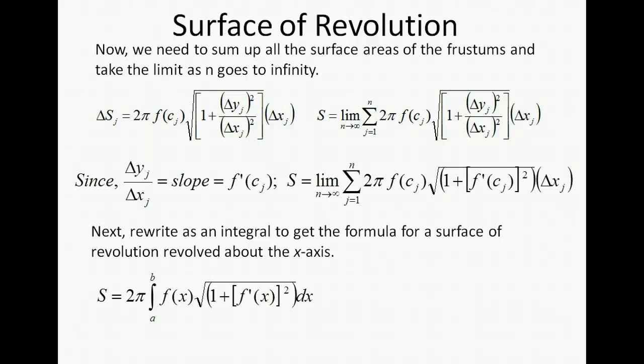What you should notice as we've gone through this is part of this formula is really the arc length formula. With the arc length formula we have the square root of 1 plus [f'(x)]² squared. So we're really just doing that multiplying it by 2π times the radius length which is f(x).